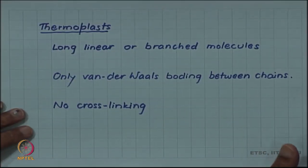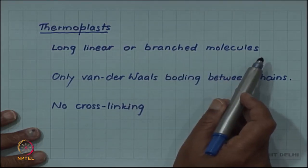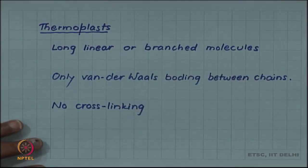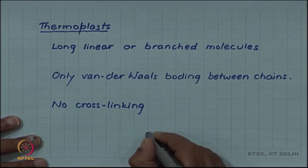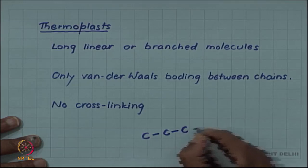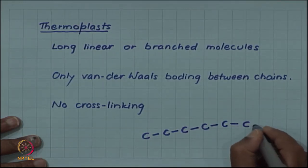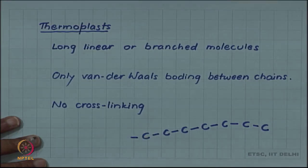These thermoplasts usually will have long linear or branched molecules. We have seen the linear molecule. Let us talk about branching. A linear molecule will have all carbon chains in one line, not necessarily straight line - we have talked about conformation.